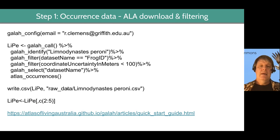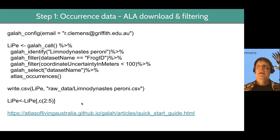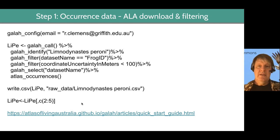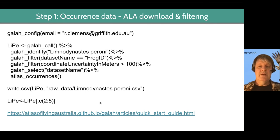Then you can select the subset of that data that's important to you. You're going to get a lot more columns than you need — I'm only interested in columns two through five. If you have more questions about how to download and filter data from ALA, you can visit this website, which walks you through the various things you can do.